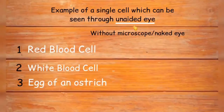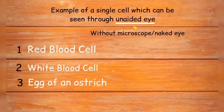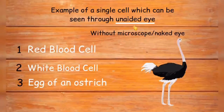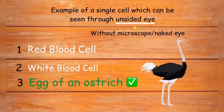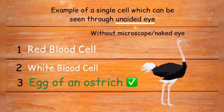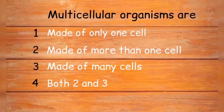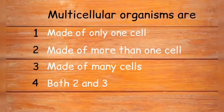Most organisms have cell sizes in micrometers or microns and cannot be seen through unaided eyes — they can only be observed under a microscope. However, exceptions exist. There is a cell which can be seen without a microscope: the egg of an ostrich. Multicellular organisms are made up of more than one cell, or many cells. Both options two and three are correct, so the answer is option four — both two and three.